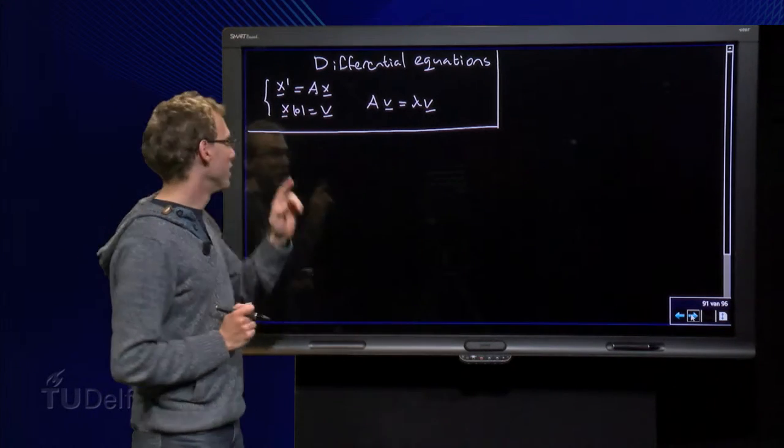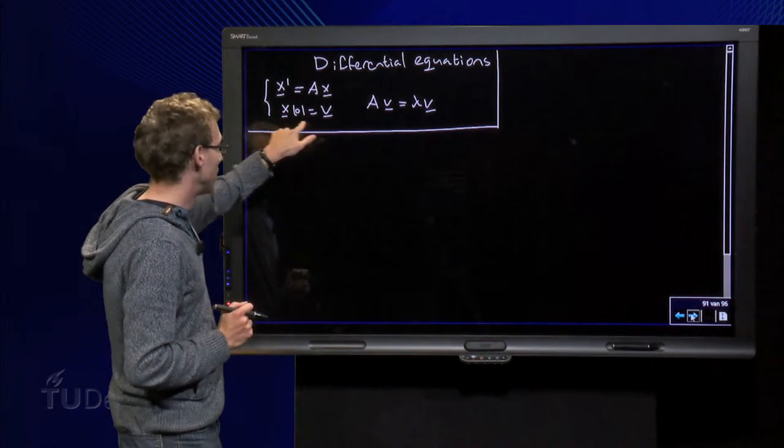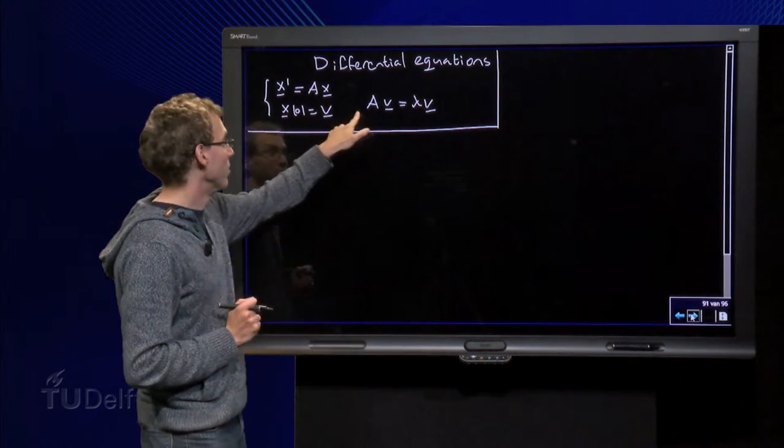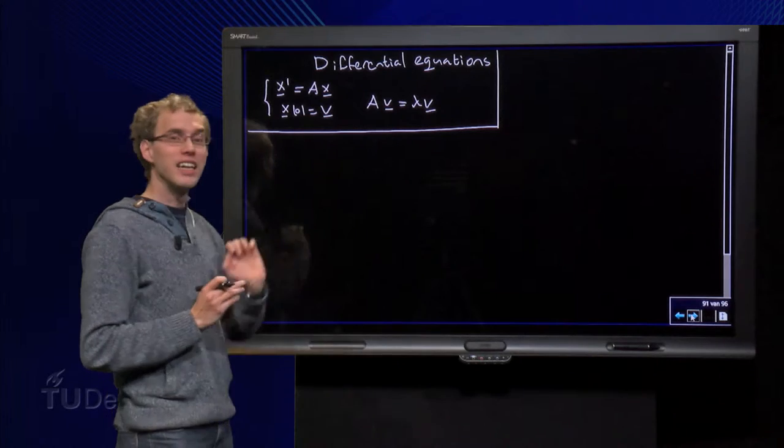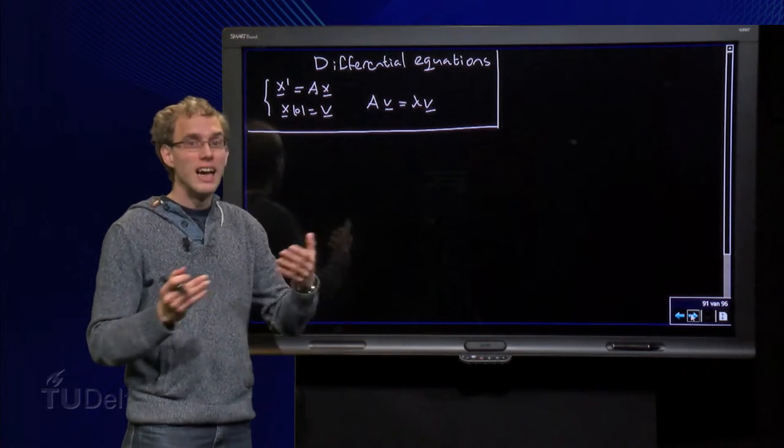Suppose we have a differential equation x prime equals Ax, where the initial state x0 equals v, where v is an eigenvector of A, so A times v equals lambda v. In that case we can write down the solution explicitly in quite an easy form.